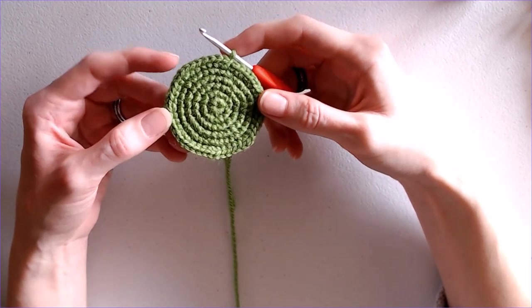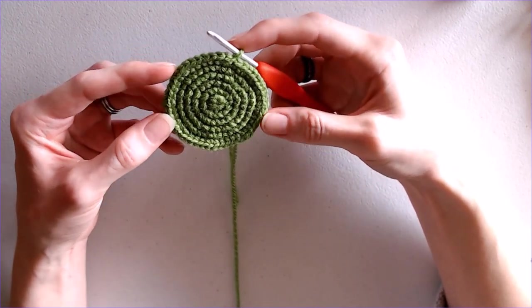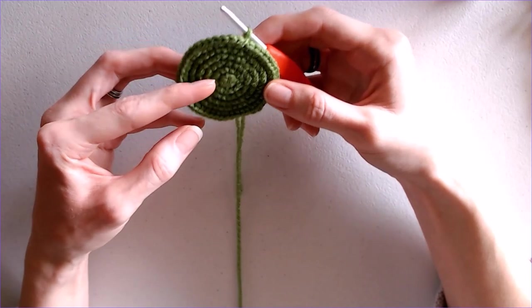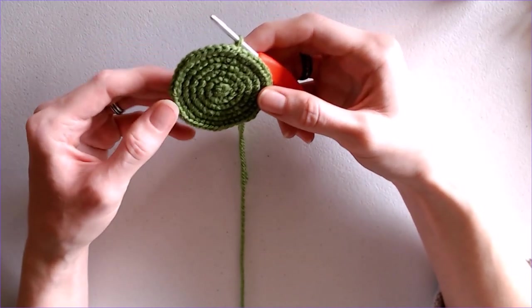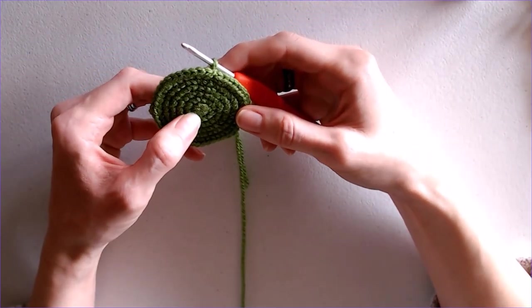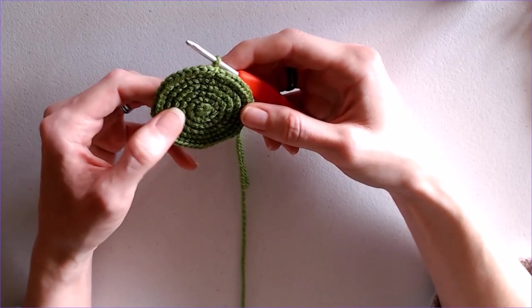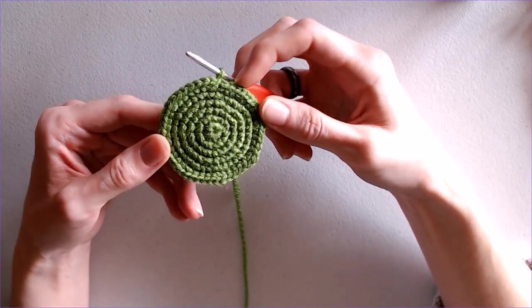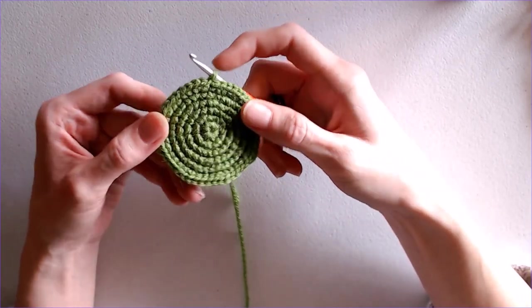Usually for Amigurumi we would just work in the spiral to avoid any kind of seam, but that can create a curved line to any of our mid-row color changes. So in order to make sure that they line up row to row in a nice straight line, you can use this seamless join to make sure your rows line up perfectly.